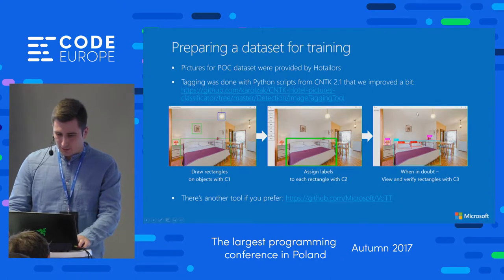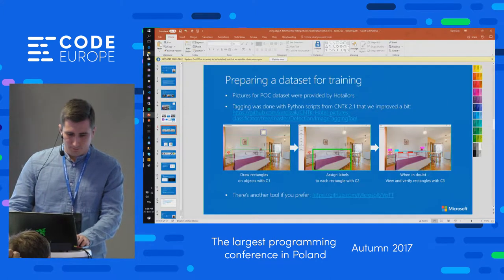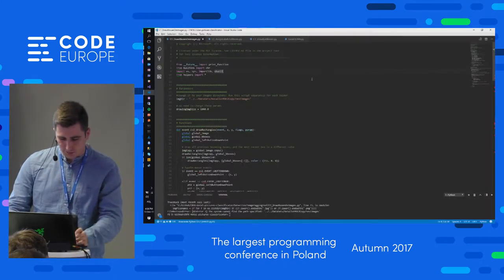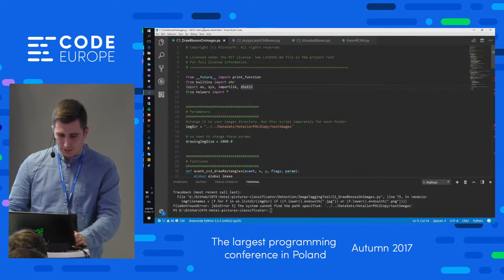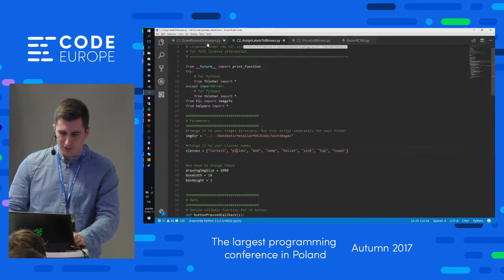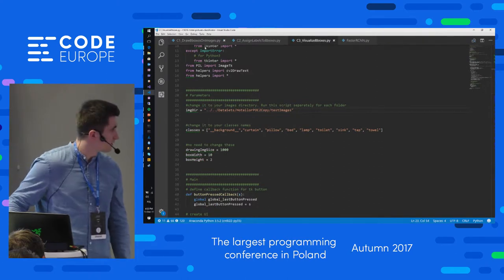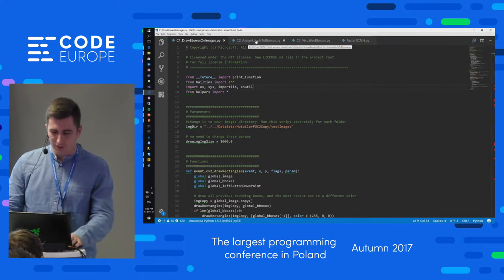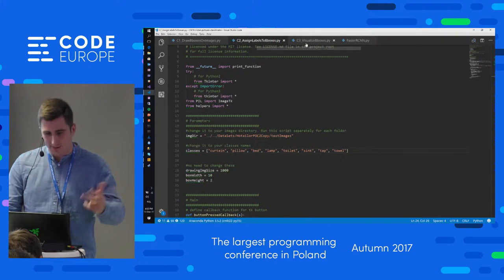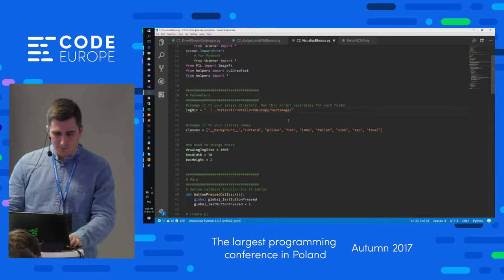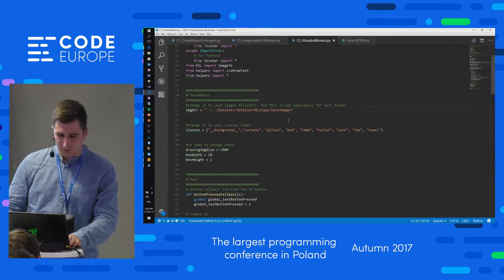Let me just show you how we did it. Let me move to VS Code. So I have three scripts here: C1, C2, C3. I'm not going to go much into the details, but as I already mentioned, C1 is used to draw the bounding boxes over objects. C2 is to assign the labels, and C3 is just for visualization to review whether we assigned all the labels correctly.